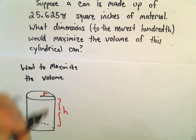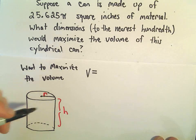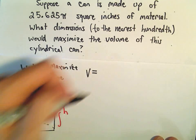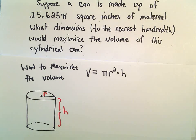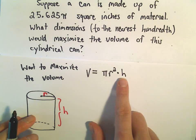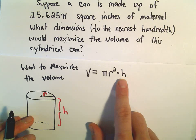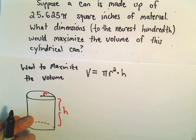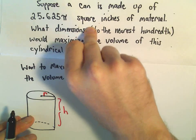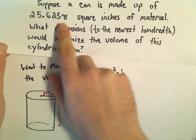So what we want to maximize is the volume. Well, the volume of a can, we just take the area of the base, which is πR², and then we multiply that by the height. So that's the thing we want to maximize. But what we want to first do is get this into an equation either involving only R or only H. And the way that we can do that is we can use the amount of material used.